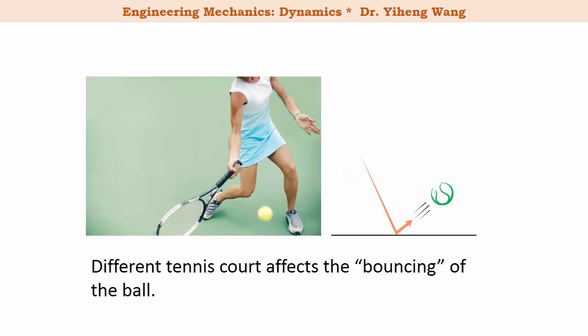An example of a field where impact is widely studied is sport. For example, if you play tennis, you must take into consideration what court you are playing on. Is it clay, or grass, or even carpet? Because you know that different tennis courts will affect the bouncing of the tennis ball.